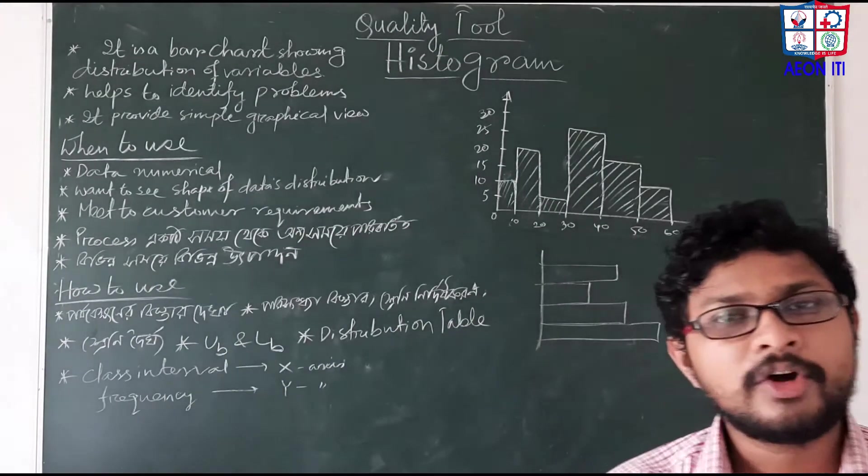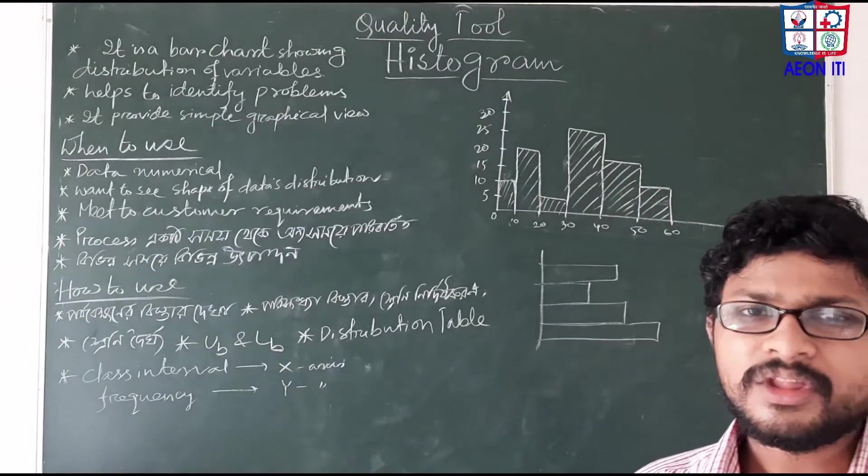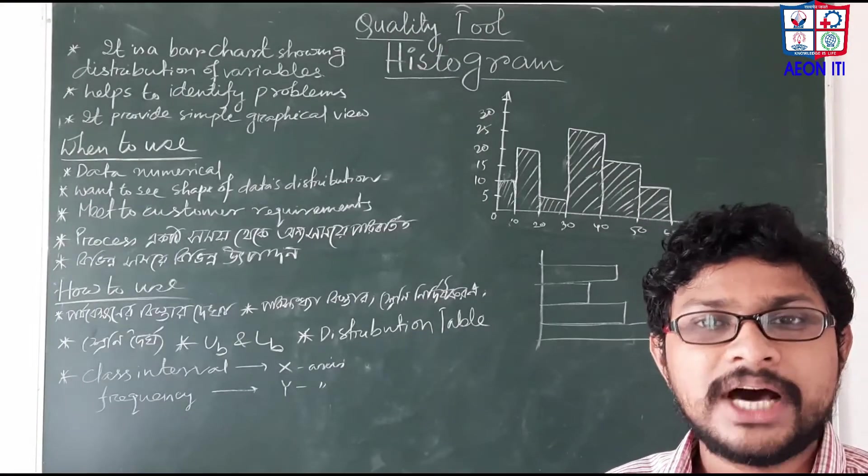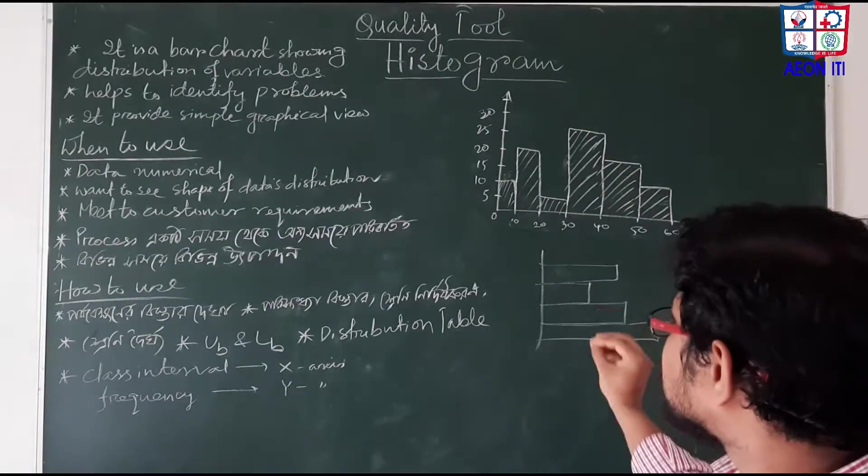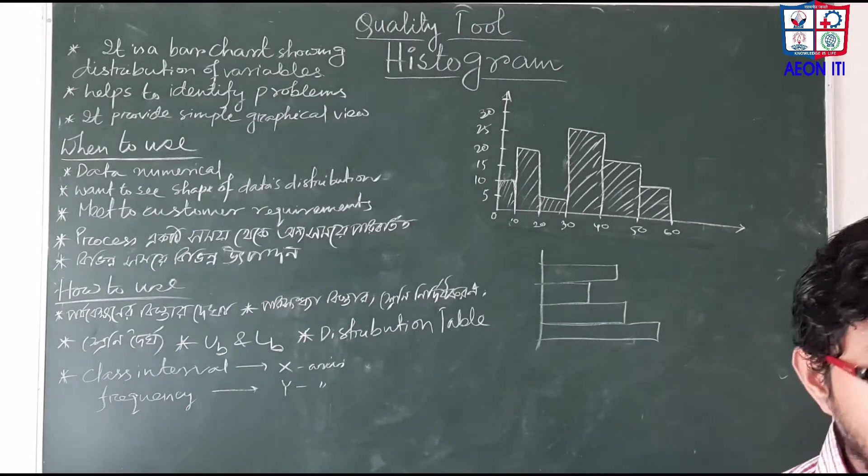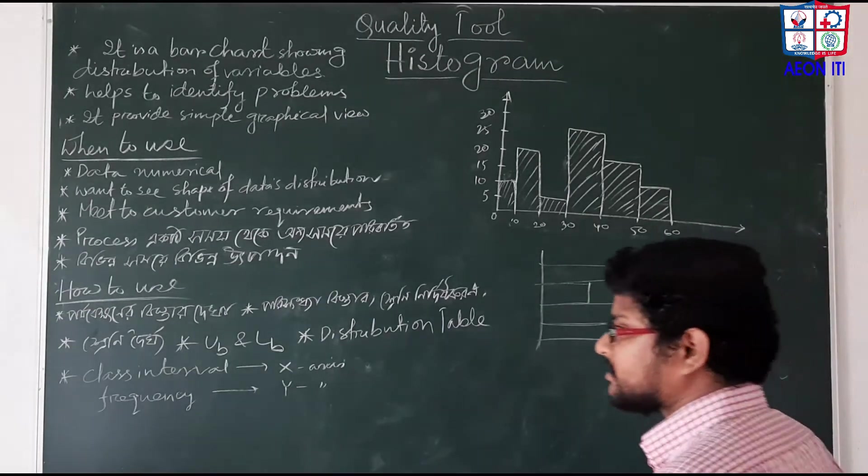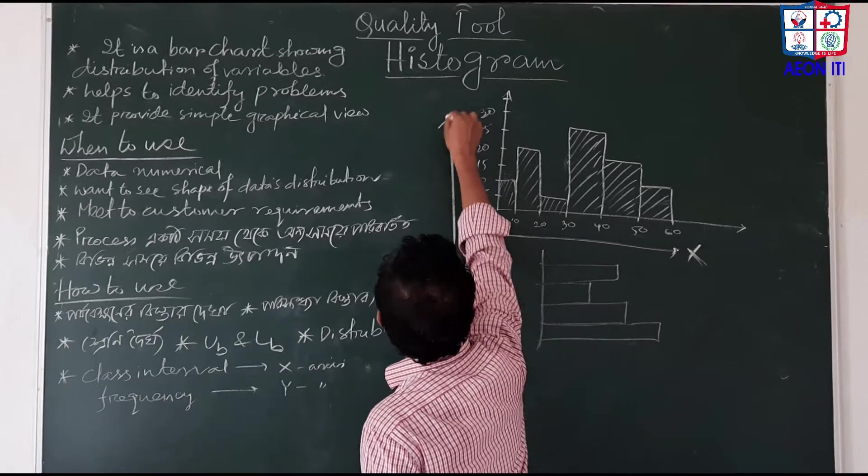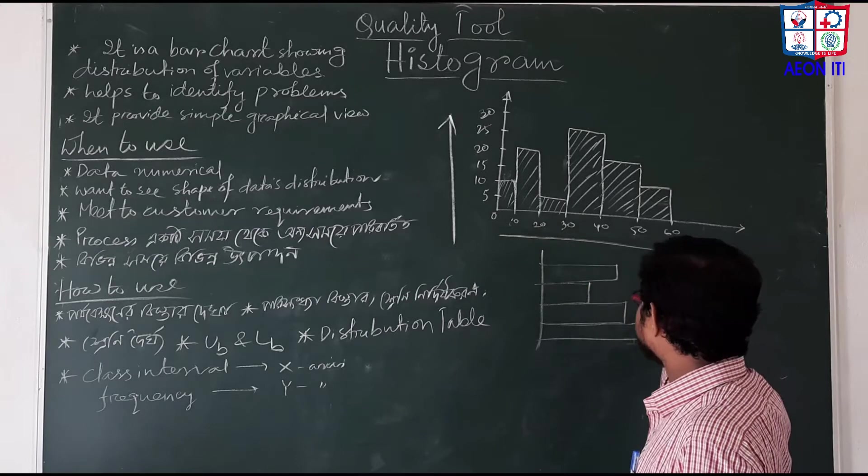There we can see the distribution. If the distribution is available, then we have a high temperature. Then the histogram will be done by class. The class has been done at the intersection of x-axis. The data is done by x-axis, and then the data is turned by y-axis, and all the data will be done by the scale.